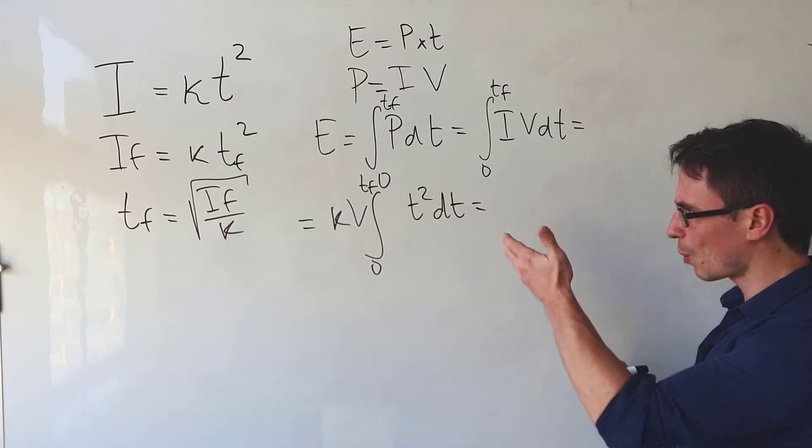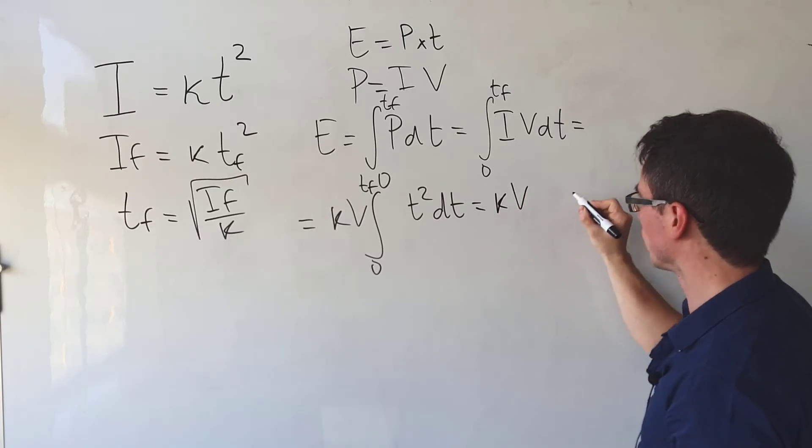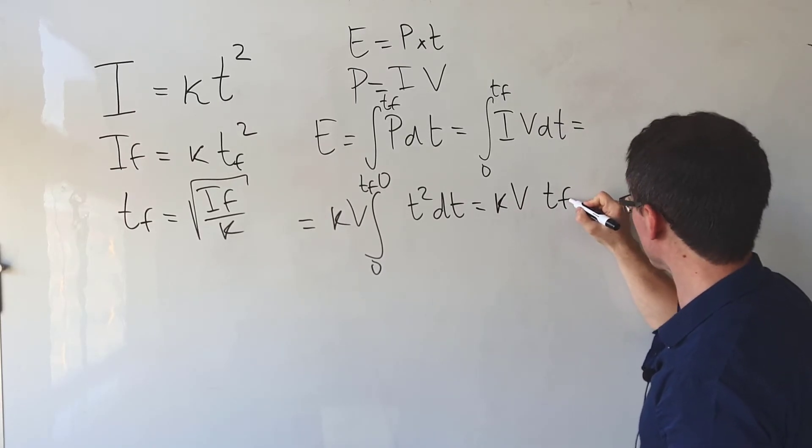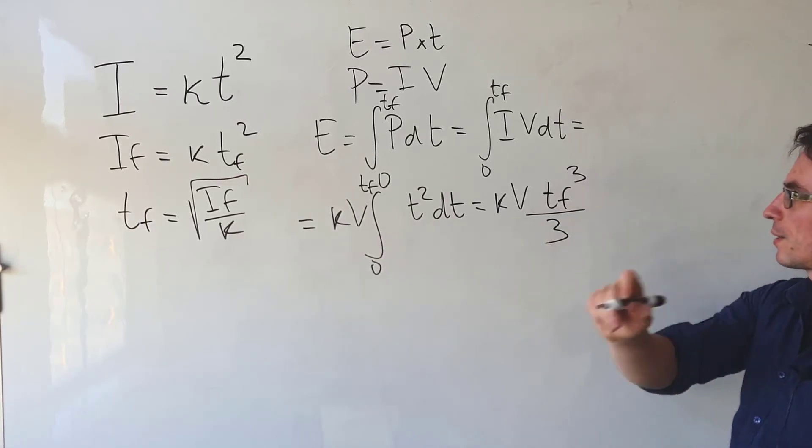When we evaluate that over this boundary we are going to get kv multiplied by tf raised to the power of three divided by three.